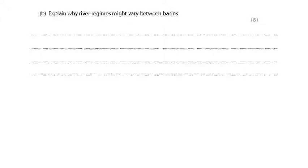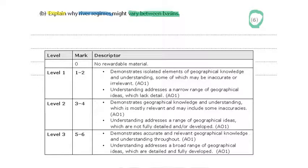The next question — just double check whether there is a resource you need to refer to. In this case there's not. The question is: 'Explain why river regimes might vary between basins.' It's asking what are the reasons that the river regimes — you've got to know what the key term 'river regime' is — and then say why they would vary. Here we're looking at six marks, so ideally you want three key points which are well explained, or two explained in much more detail. Make sure you don't get it mixed up with soil moisture or any other factors. Pause the video and have a go now.